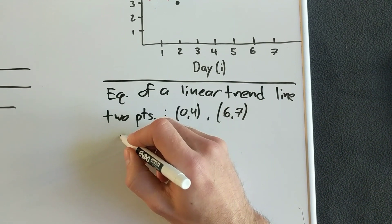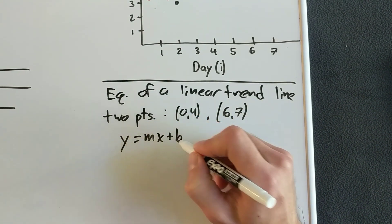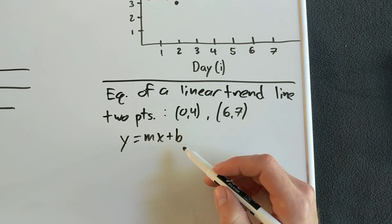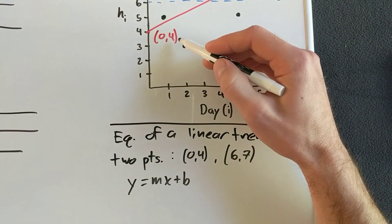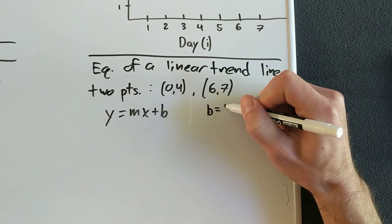And we want to convert this into a y equals mx plus b. b is the y-intercept. That one we've already found, four. So we already have b equals four.